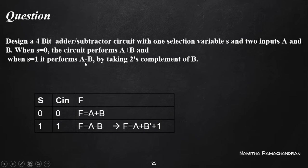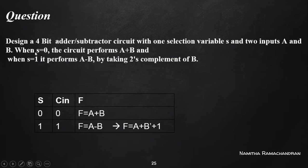That means we need to implement A minus B as the two's complement addition of B. This is for designing an ALU that performs two operations: when the selection variable is 0, it performs addition, and when S equals 1, it performs subtraction. The subtraction is implemented using the two's complement addition format.